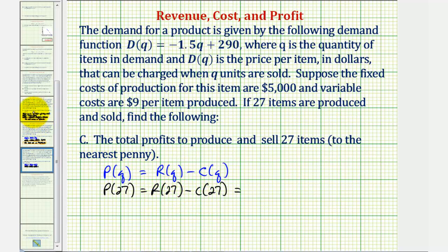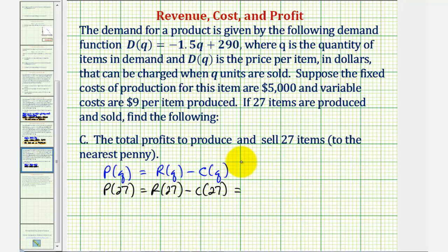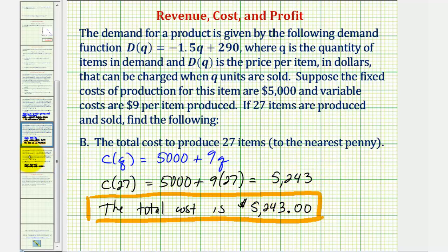R of 27 was equal to 6,736.5 and C of 27 was equal to 5,243.